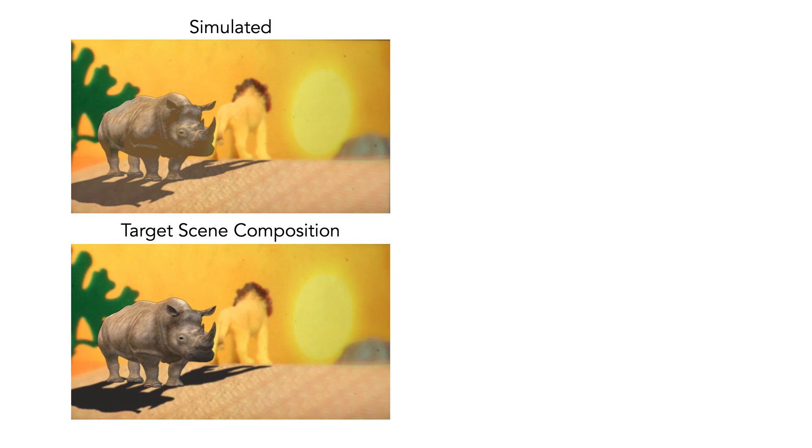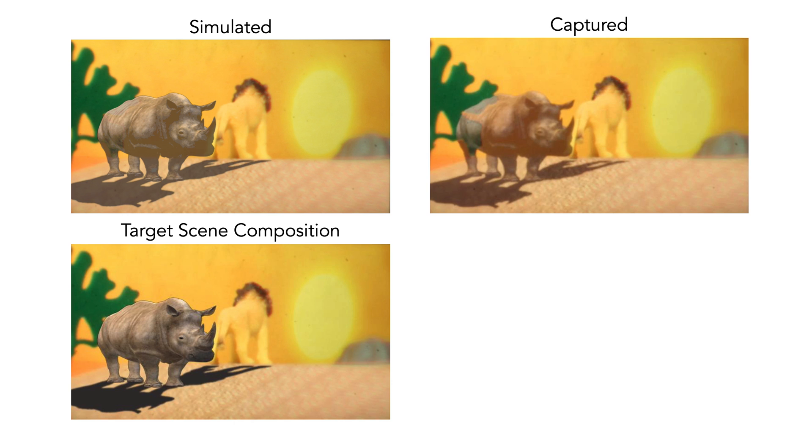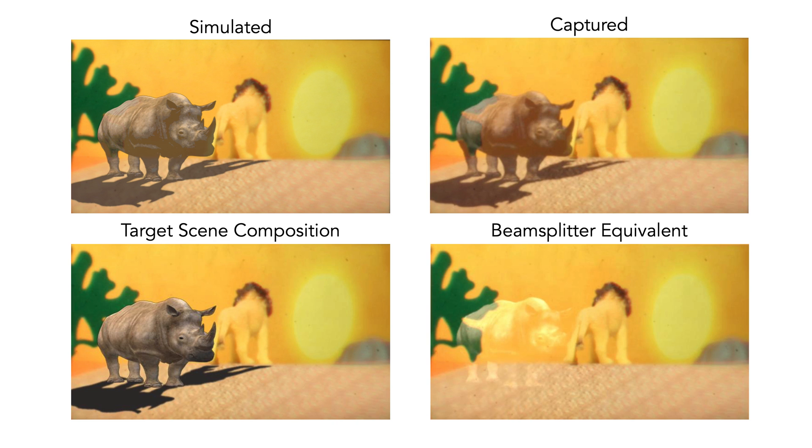So here's a Lion King inspired scene composition, where down the bottom, you can see that the rhino and the shadows are the added digital content. And at the top, we have the simulated output of what our approach should be able to achieve. And here's what we captured, which you can see shows an improvement in occlusion capability and rendered color compared to that that would be produced by a conventional beam splitter configuration. In particular, the ability to block real light from the physical scene means that the realistic shadow effects can be rendered.